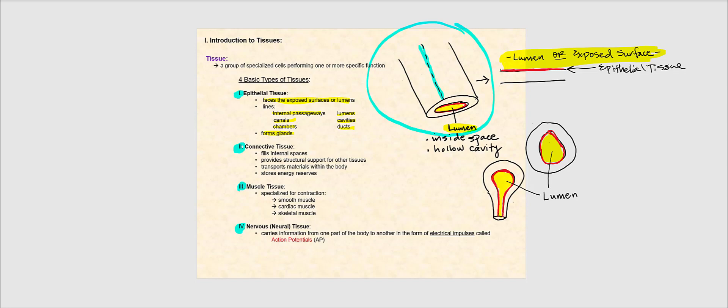Going back to this tube-like structure, I'll put A, B, C designations and ask where we should look for epithelial tissue. After making the imaginary slice, we open it up. A is the outer region, B is the middle region, and C is where the red line is — facing the lumen. If you answered C, you are correct, because the epithelial tissue faces the exposed surfaces or the lumens — the inside space, the hollow cavity.